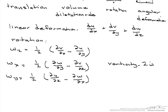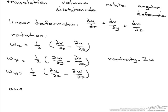The final type of movement is what's known as angular deformation. Angular deformation can be calculated as dv dx plus du dy.